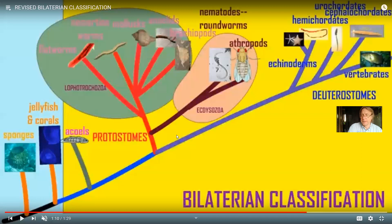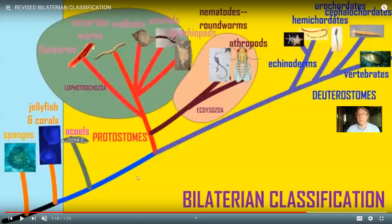Getting back to this: the genetic evidence, when we compare sequences, supports the acoel flatworms as still the most primitive bilaterians — bilaterally symmetrical rather than radially symmetrical like a jellyfish. But now there are new groups, which would include Lophotrochozoa — things like brachiopods, annelids, mollusks, ribbon worms, and flatworms. Flatworms, which used to be down here as primitive, are now up here. And then Ecdysozoa, which would include nematodes and arthropods — nematodes used to be down here as well.